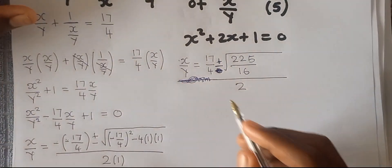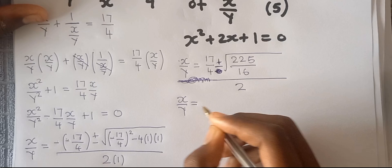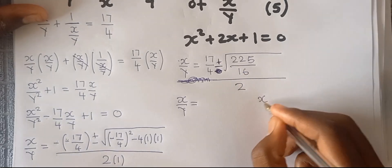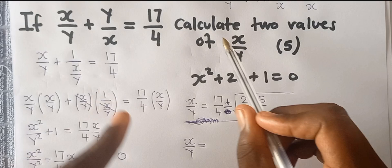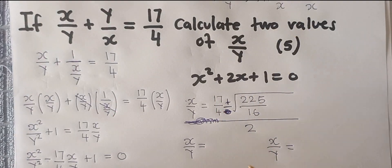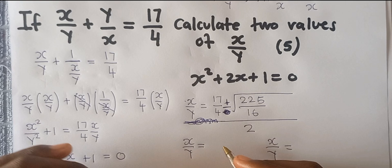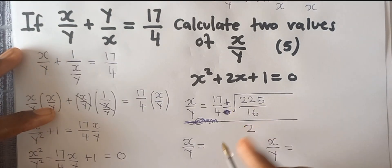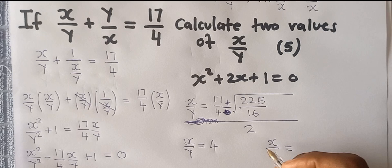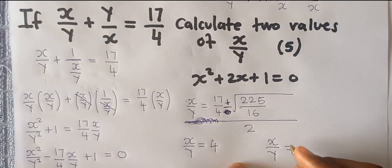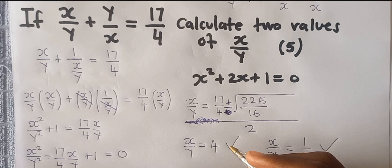Let's go now and apply and find our x over y for negative and the positive, because there are going to be two answers since they say we must calculate the two values of x and y. If you punch this one using the positive answer, you're going to get 4, and when you put negative here you're going to get 1 over 4. So these are your two answers.